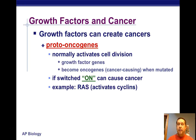An example is RAS, which activates cyclins — things that are needed for the cell to move through the checkpoints.